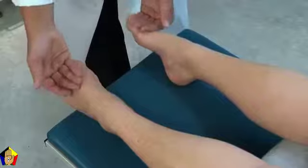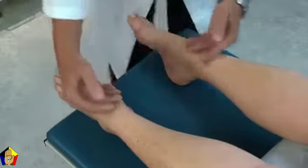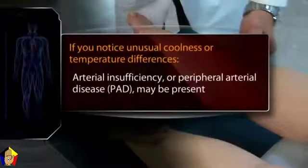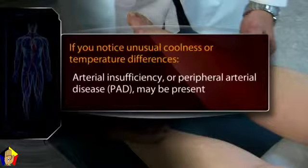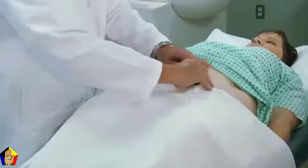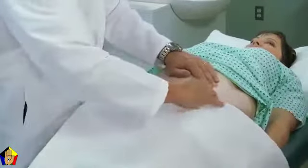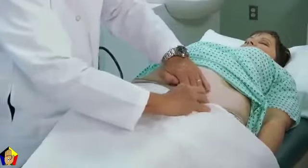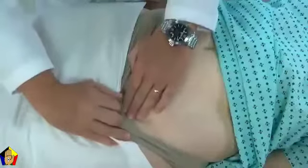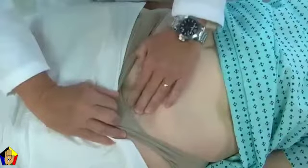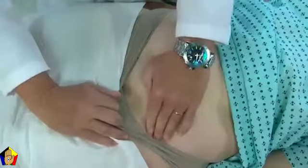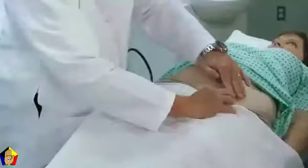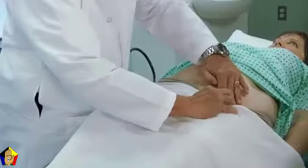Assess the skin temperature of the feet and lower legs with the backs of your fingers. If you notice unusual coolness or temperature differences, check further up the legs, as arterial insufficiency or peripheral arterial disease may be present. Next, palpate the superficial inguinal nodes, including the horizontal group and the vertical group, noting the size, consistency, discreteness, and tenderness of any palpable nodes. Small, mobile, non-tender inguinal nodes up to one or two centimeters in diameter are often palpable in normal adults. Examine the opposite inguinal area in the same way.